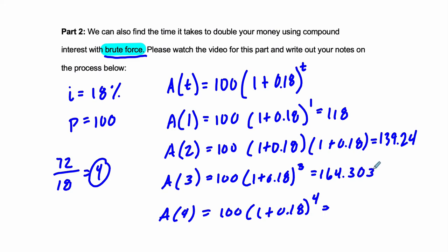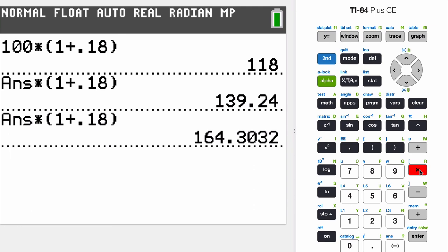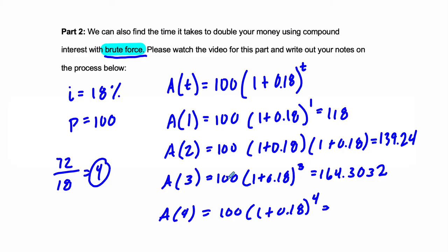And then after the fourth year, we do it again, times 1 plus 0.18. And you can see it's really close to doubling. 193.88, let's say. That's the approximation. That's an important part. It's an approximation. 193.88.